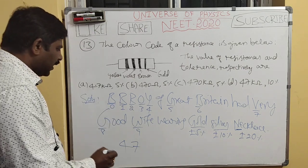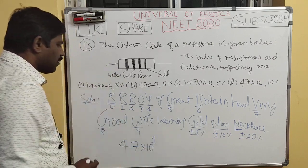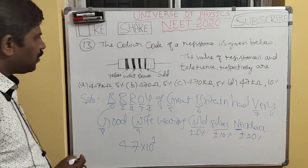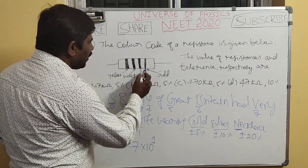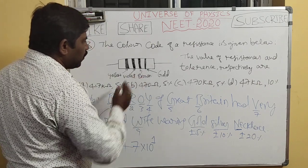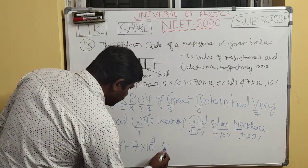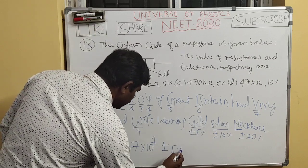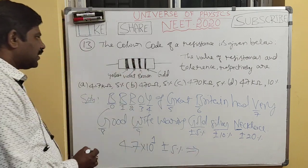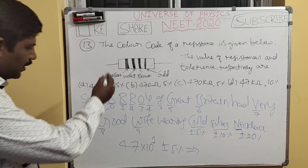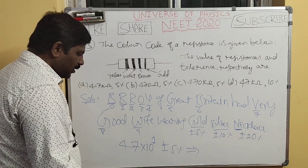The third band is brown, and brown has value 1, so the multiplier is 10 to the power 1. The fourth band is gold, which indicates a tolerance of ±5%. So the resistance is 47 × 10¹.